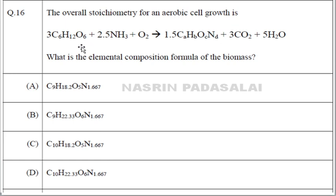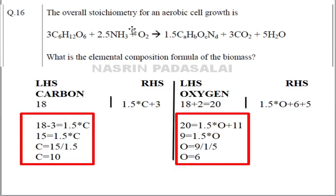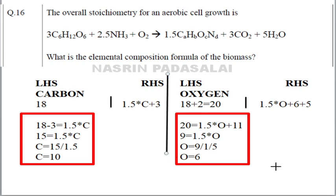Question 16 is about the overall stoichiometry of anaerobic cell growth. They give an overall stoichiometry equation and ask us to find the elemental composition formula for biomass. Since nitrogen is 1.67, there is no need to calculate the elemental composition for nitrogen — you only need to concentrate on carbon, hydrogen, and oxygen. We'll first look at carbon, then oxygen.